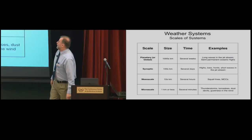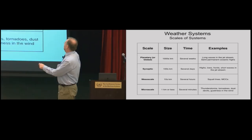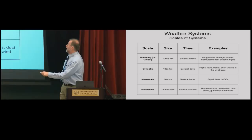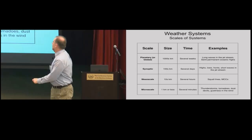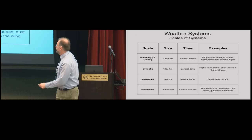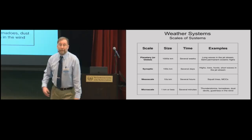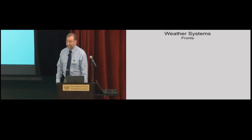A quick look at scales of weather systems. Planetary or global scale features are large and can last for many weeks or even a whole season. Synoptic scale features — sometimes called weather-map scale — are the highs, lows, and fronts you see on a daily weather map, with time scales of days and sizes of hundreds of kilometers. Mesoscale and microscale are smaller, more difficult to predict, but they still affect you, whether it's a squall line or an area of unexpected light wind.